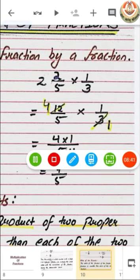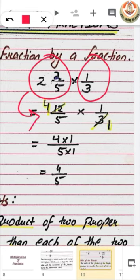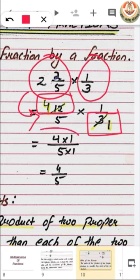For example, here we have a mixed fraction and a proper fraction. First, we have to convert the mixed fraction into its improper fraction. Then we have one improper and one proper fraction to multiply. We can see the denominator of this fraction can cancel out the numerator of the other one, so we cancel them. Now we have this as our answer.